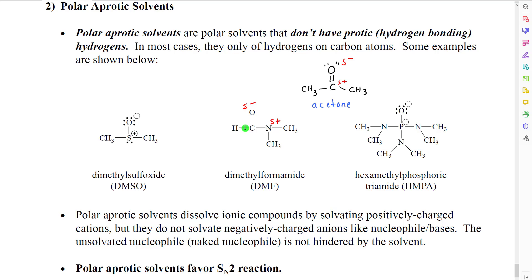Therefore, the polar aprotic solvents will do strong solvation with cations, and they will leave the negative anions unsolvated. We often call these naked anions or naked nucleophiles because they are not covered up with solvent.